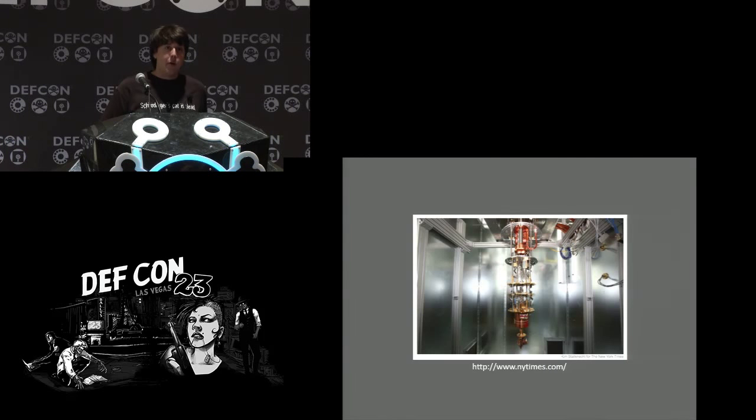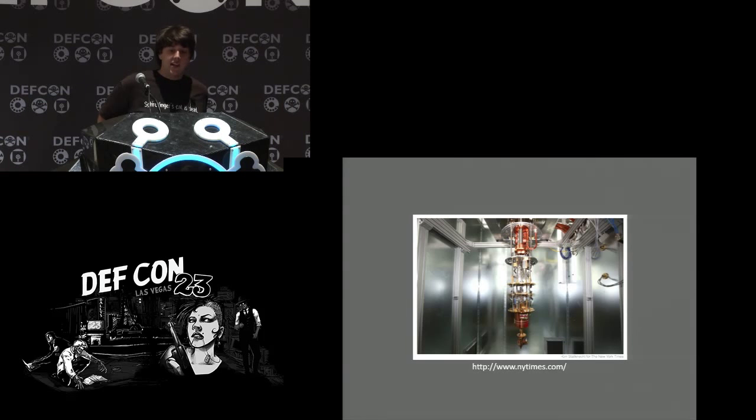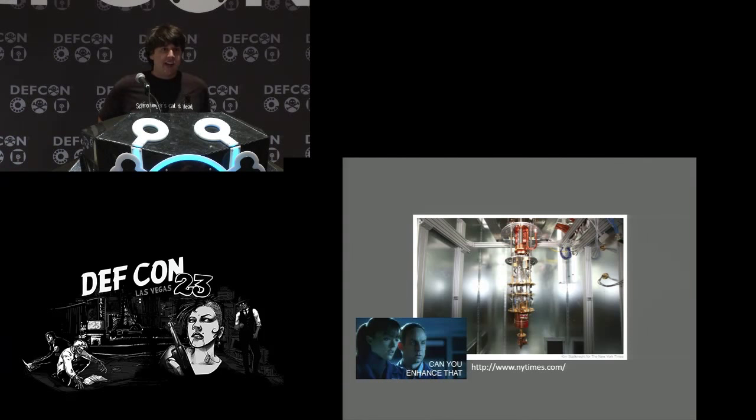Most of you have probably seen this picture before — this is the D-Wave case, a big black box about the size of a small room. If you open it up, this contraption is mostly for cooling. The box also has room for a technician to stand inside for repairs. But the chip is tiny and at the bottom — you can't even really see it from here. There's actually a lot of classical circuits on this chip. Only that middle-left gray square is the quantum part.